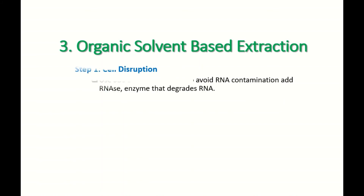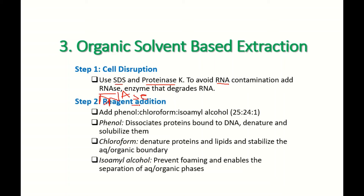Organic solvent-based extraction: disrupt your cell using SDS as a detergent and Proteinase K for enzymatic/chemical lysis. To avoid RNA contamination when extracting DNA, you can add RNase; if extracting RNA, add DNase. Then add phenol-chloroform-isoamyl alcohol in the ratio of 25:24:1. Phenol dissociates proteins bound to the DNA and denatures and solubilizes them. Chloroform denatures proteins and lipids and stabilizes the aqueous-organic phase boundary. Isoamyl alcohol prevents foaming to enable clear separation of phases.